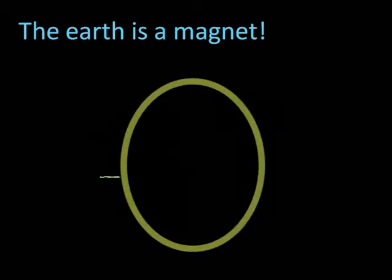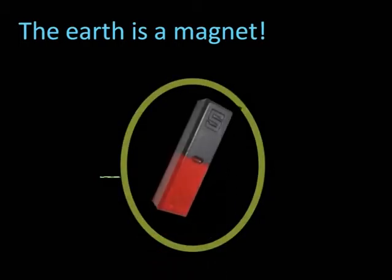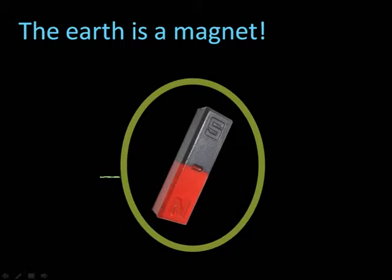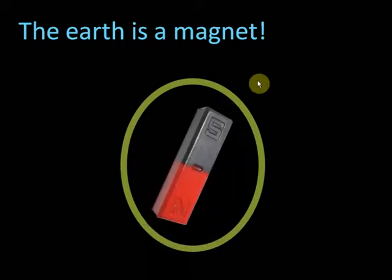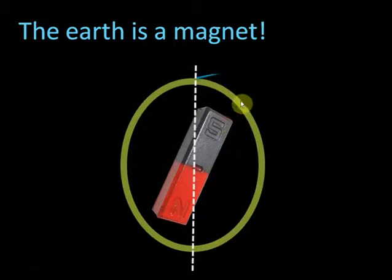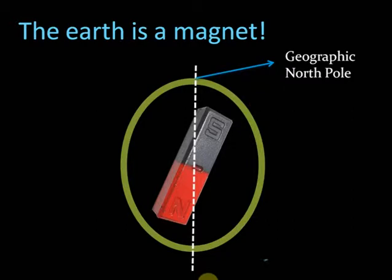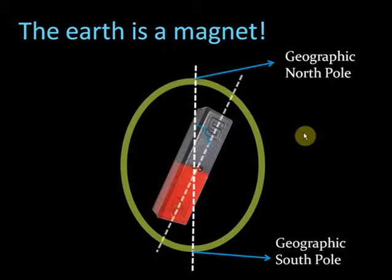The first thing we are going to see is how the earth is actually a magnet. The geographic north and geographic south of the earth are like this along this white line. This is the north pole of the earth and this is the south pole of the earth. The magnetic north and magnetic south of the earth, however, are at an angle 11.5 degrees with geographic north and the geographic south.